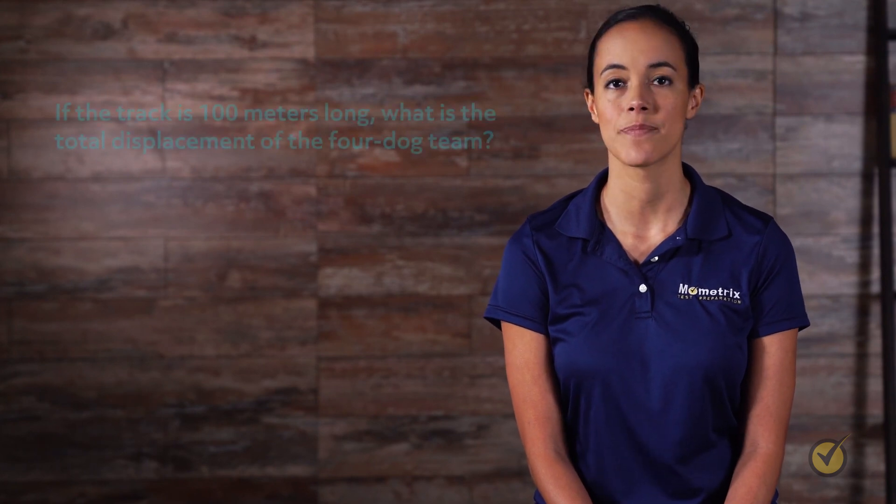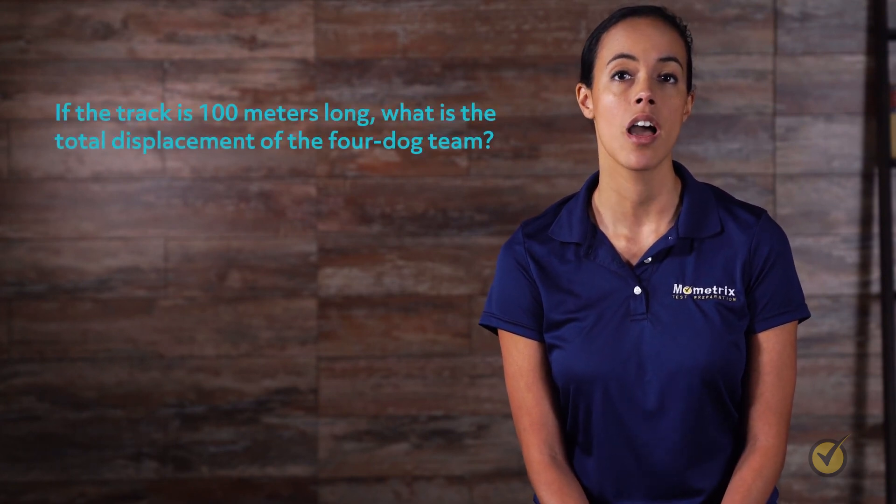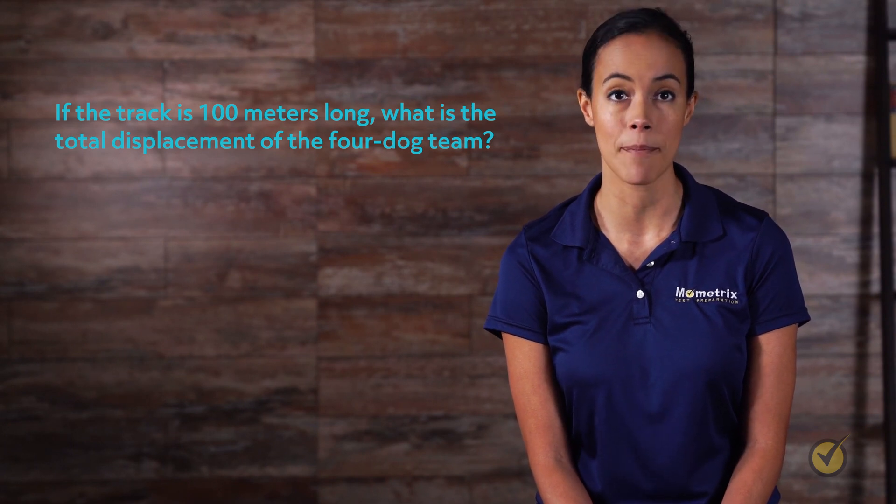Before we go, let's wrap up with a review question. In flyball, dogs take turns running down a track, grabbing a ball, then running back to the start, like a relay race. If the track is 100 meters long, what is the total displacement of the four dog team?